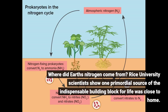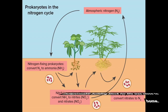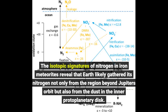Where did Earth's nitrogen come from? Rice University scientists show one primordial source of the indispensable building block for life was close to home. The isotopic signatures of nitrogen in iron meteorites reveal that Earth likely gathered its nitrogen not only from the region beyond Jupiter's orbit but also from the dust in the inner protoplanetary disk.